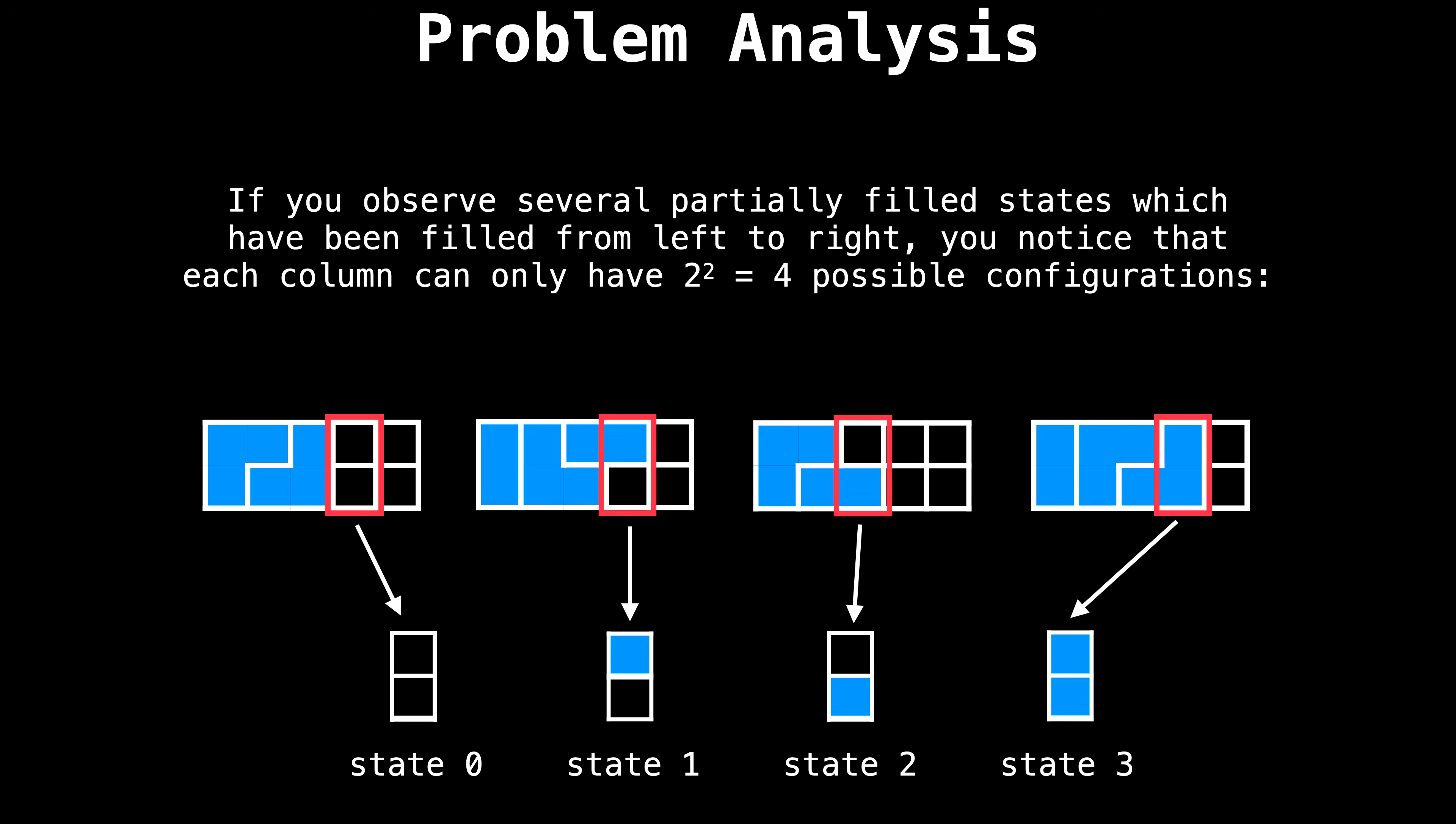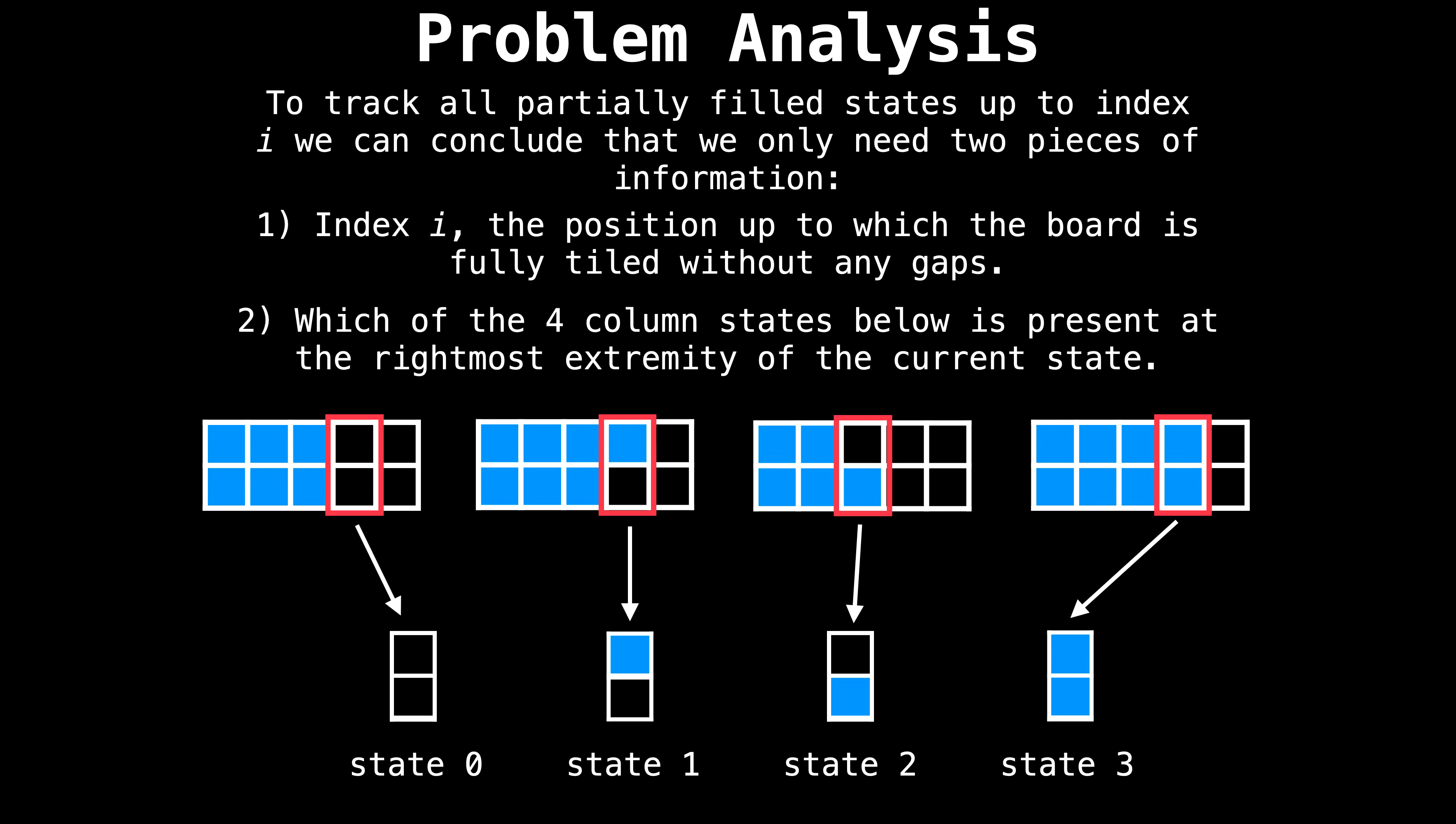Apart from observing that our grids should be tiled without gaps, and tiled from left to right, you should also see that for every column slice, there can be at most four possible configurations. Either we're going to have what I call state zero where neither row is tiled, state one where the top row is tiled, state two where the bottom row is tiled, or state three where both rows are tiled. With that we have enough information to track all partially filled states up to a certain index. We can conclude that we only need two pieces of information. First is index i, the position up to which the board is fully tiled without gaps. And second, which of the four column states below is present at the rightmost extremity of the current state.